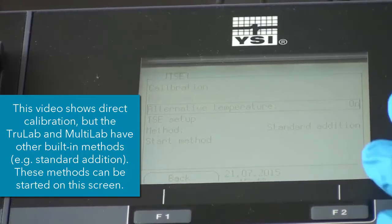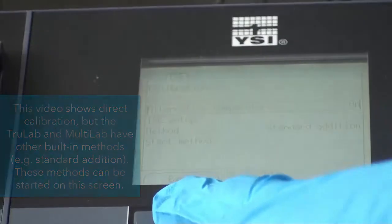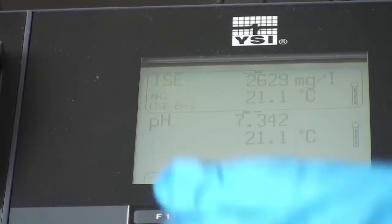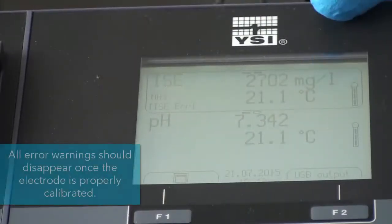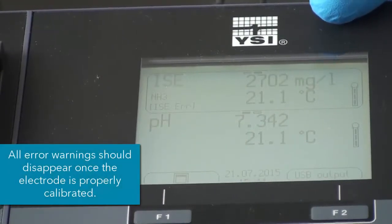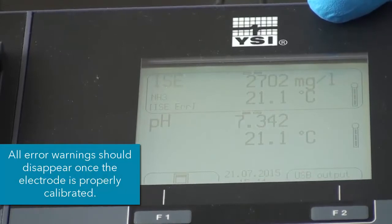So with that, I have this alternative temperature set to on, so we will use that alternative temperature. So once you have done that, don't be alarmed if you see any error warnings, and those will go away once you calibrate it.